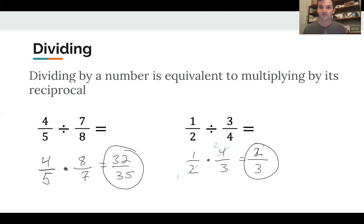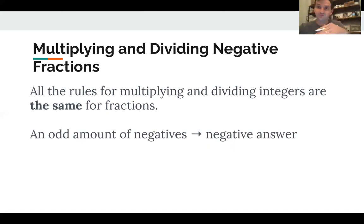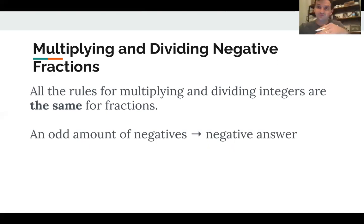Now, you'll notice I haven't said anything about positive and negative numbers, and isn't that the unit that we're in? I've really only talked about 6th grade stuff. Well, that's because you guys are in luck. All the rules for multiplying and dividing integers are the same for fractions. So what do I mean by that? If you have an odd amount of negatives, then the answer becomes negative because it flips negative, positive, negative, positive, and then it ends up being negative. But if there's an even amount of negatives, then it goes to the negative, then to the positive, and then it's positive. So those rules are exactly the same.